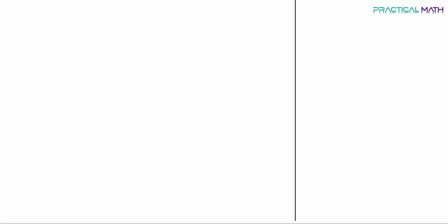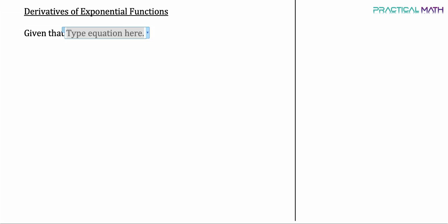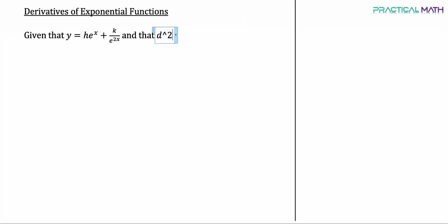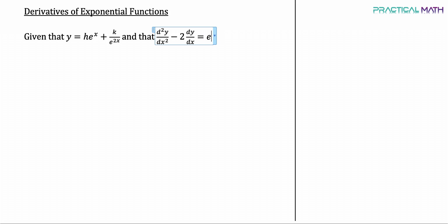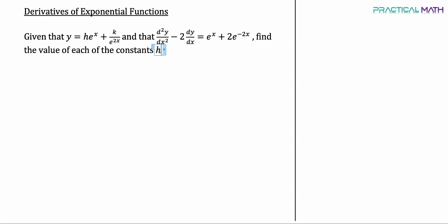In this video, we will be discussing derivatives of exponential functions. The question goes: given that y equals h times e to the power of x, plus k divided by e to the power of 2x, and that d²y/dx² minus 2 times dy/dx equals e to the power of x plus 2e to the power of negative 2x. Find the value of each of the constants h and k.